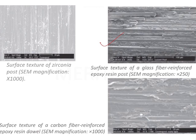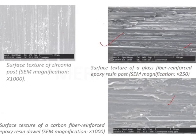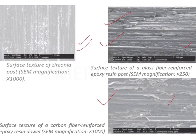We will now see the SEM image of a glass fiber reinforced epoxy resin post — you can appreciate the roughness there. Here also you can appreciate the roughness, but the zirconia post surface is smooth with no roughness. This image is given in the question: surface texture of zirconia post at SEM magnification 1000x. Here we see the surface texture of glass fiber reinforced epoxy resin at SEM magnification 250x, and at 1000x SEM magnification of the carbon fiber reinforced post. Comparing these, the roughness is minimum in the case of the zirconia post.